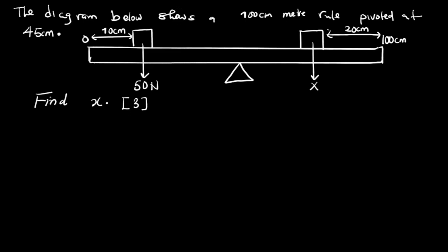The diagram below shows a 100 centimeter meter ruler. It's pivoted at 45, so the pivot is at 45 centimeters. We are arising now together so that we can answer this question properly. The question says find X. Now for us to find X, it's like the weight of this box which we don't know.